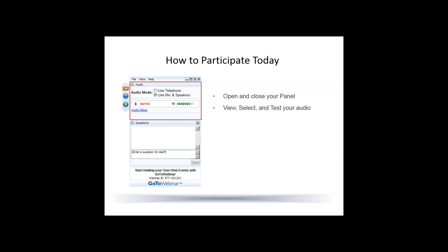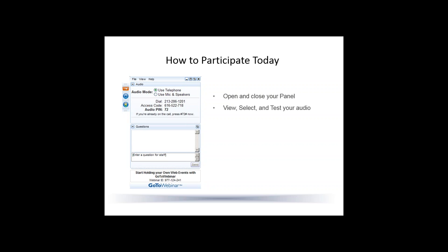The audio pane provides audio information. By default, you have joined the webinar via mic and speakers. Click Audio Setup to select your computer speaker or headset devices. If you prefer, you can join the audio via telephone by selecting Use Telephone, and the dial-in information will be displayed. You may send your questions through the Question pane — simply type in your question and click Send. We'll take your questions throughout the presentation. If you need to get our attention, use the Raising Your Hand feature. Today's webinar is being recorded and everyone will receive an email link to view it later.